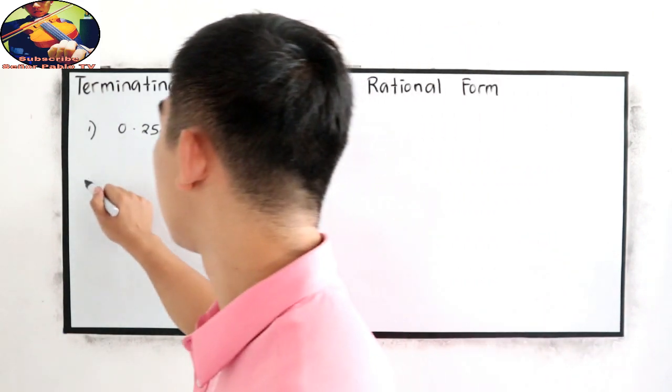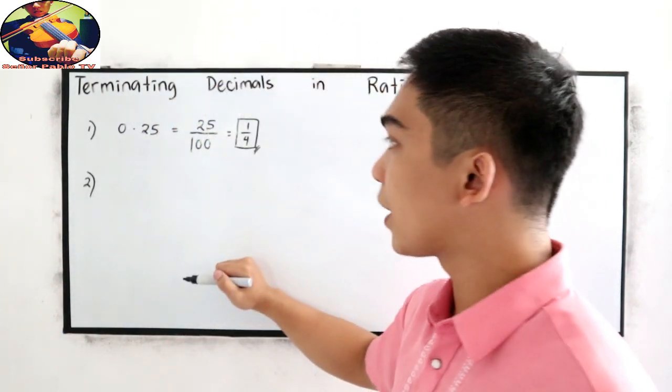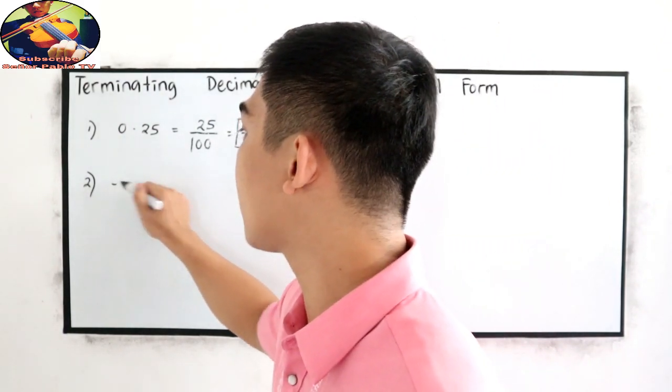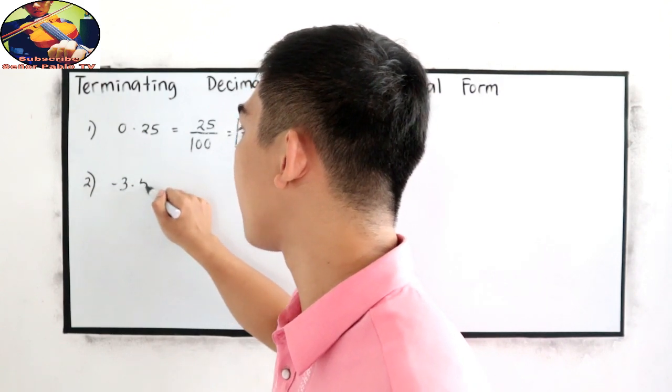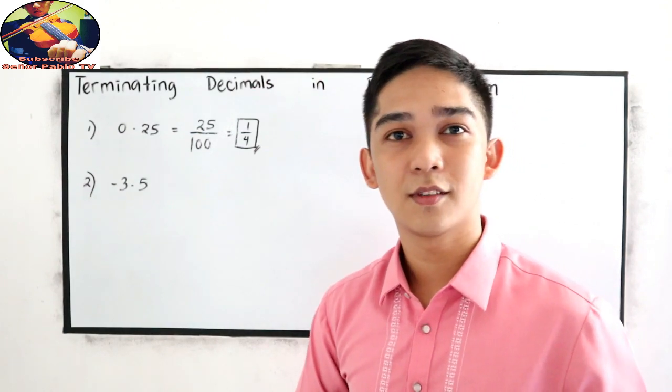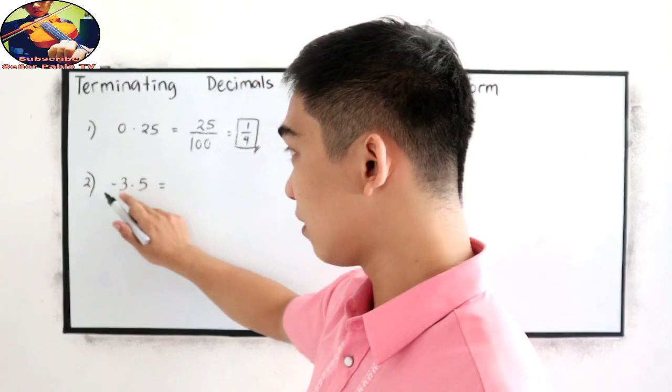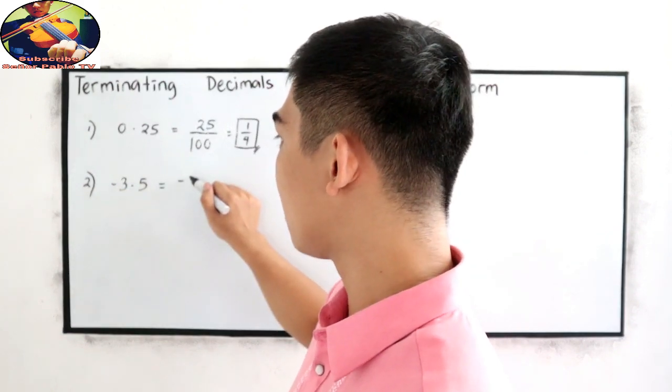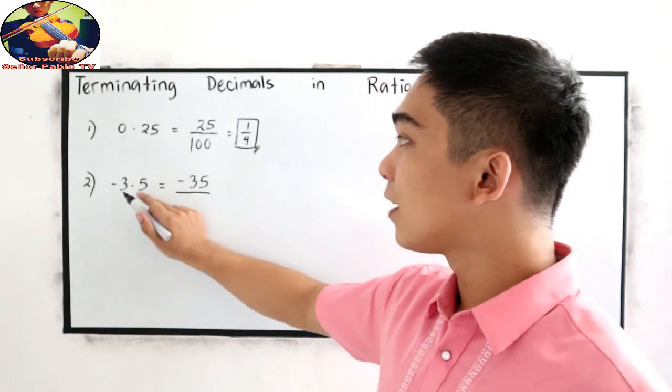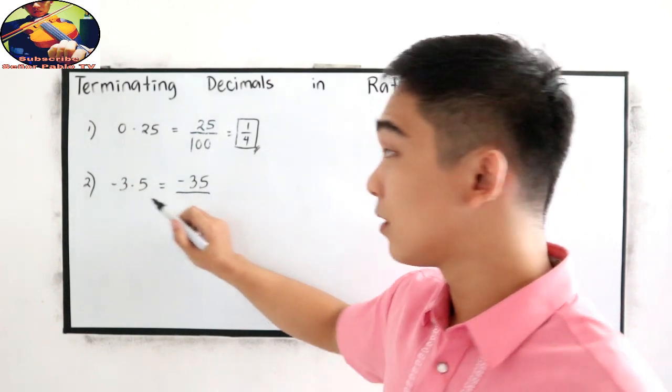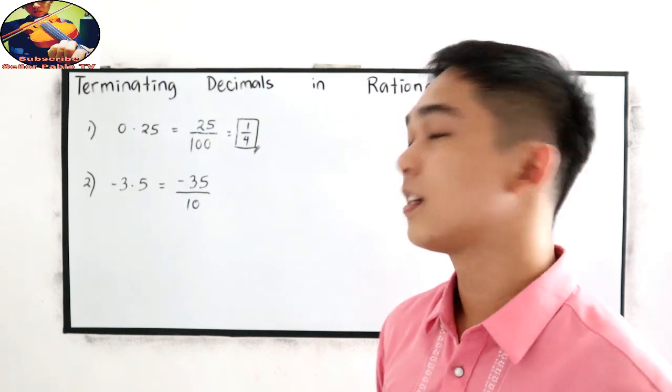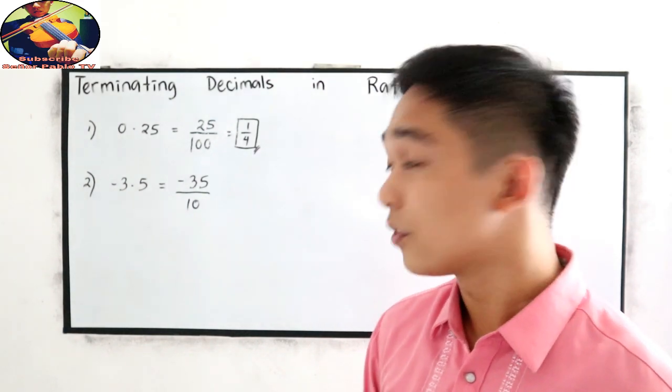Next, number 2. What if we have negative 3.5? Negative 3.5. Copy negative 3.5 over how many decimals we have? 1. So 1, 0, then just write 1. So that's equivalent to negative 35 over 10.